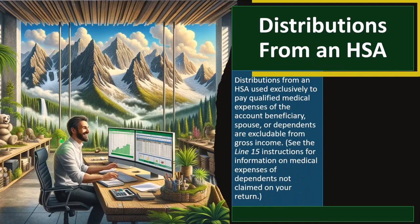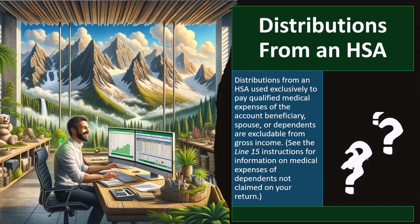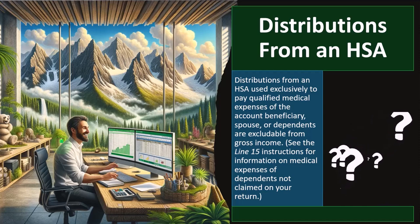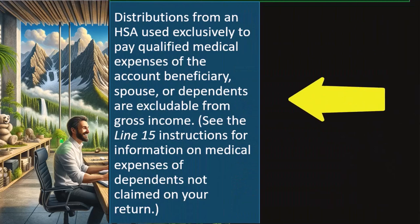Distributions from an HSA — the money coming out — is the last point where we consider whether there's a tax consequence. The key questions are: do we have to include anything in income, and is it subject to penalty? Distributions used exclusively to pay qualified medical expenses of the account beneficiary, spouse, or dependents are excludable from gross income.